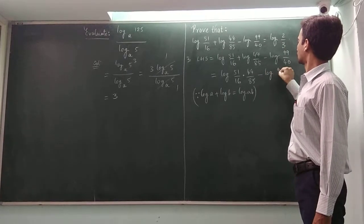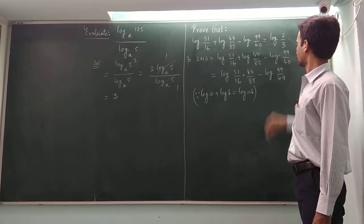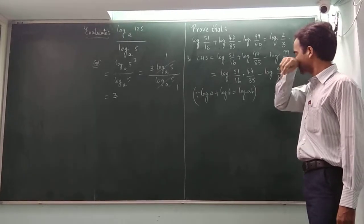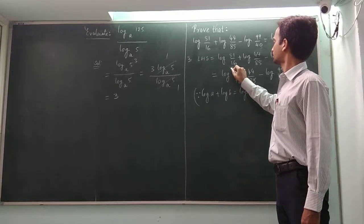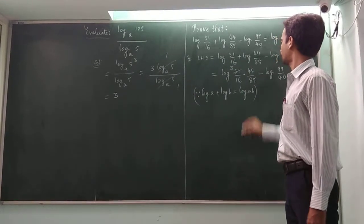Minus log 99 by 40. Here we can cancel the terms if we can do it. 17 times 3 is 51.